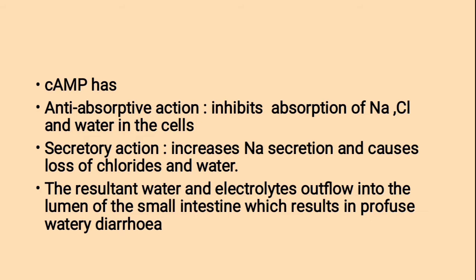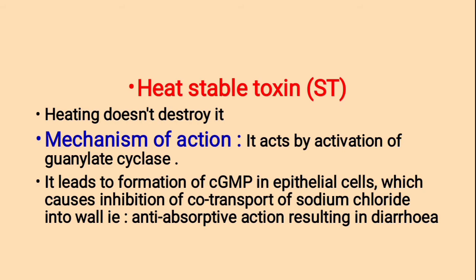Heat-stable toxin: heating does not destroy the toxin. Mechanism of action: it acts by activation of guanylate cyclase, a lyase enzyme that converts guanosine triphosphate to cyclic guanosine monophosphate and pyrophosphate. This leads to formation of cyclic GMP in epithelial cells, causing inhibition of co-transport of sodium chloride — that is, anti-absorptive action — resulting in diarrhea.